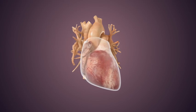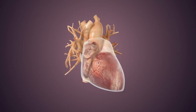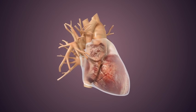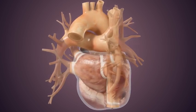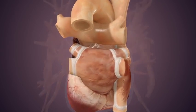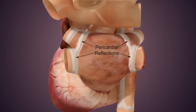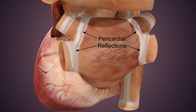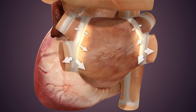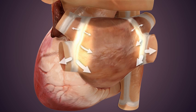Around your heart is a structure called the pericardium, and your heart is attached to it through tissue called reflections, seen here as white lines. Since the reflections do not stretch, the heart is under mechanical stress. Added factors, like heart disease or obesity, significantly increase mechanical stresses along the reflections.